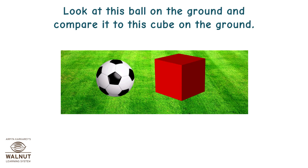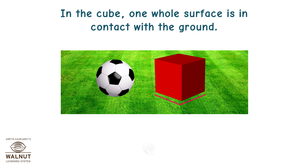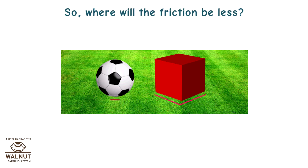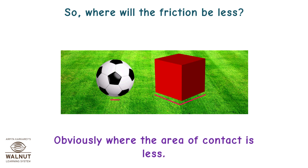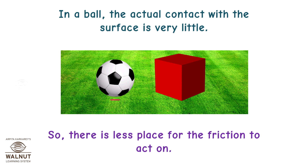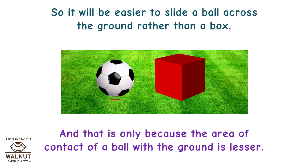Look at this ball on the ground and compare it to this cube on the ground. Look at the actual area of contact of both. In the cube, one whole surface is in contact with the ground. What about the sphere? Just a very small portion is in contact. So where will the friction be less? Obviously where the area of contact is less. In a ball, the actual contact with the surface is very little, so there is less place for friction to act on. It will be easier to slide a ball across the ground rather than a box, and that is only because the area of contact of a ball with the ground is lesser.